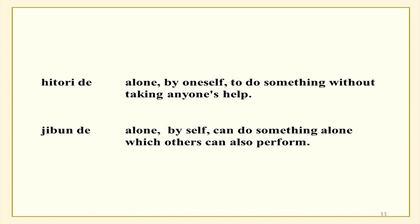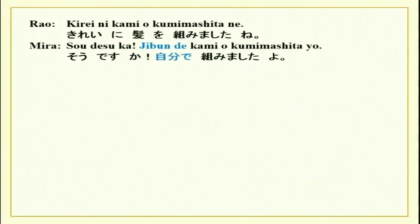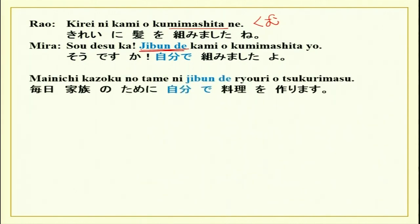For example: kireini kami wo kumimashita ne? — You have braided your hair nicely! Jibun de kami wo kumimashita yo — I did it all by myself, I did not take any help. So you are telling someone that you were able to do it on your own. Others can also help, but this time you did it yourself. There is also a sense of achievement over here.